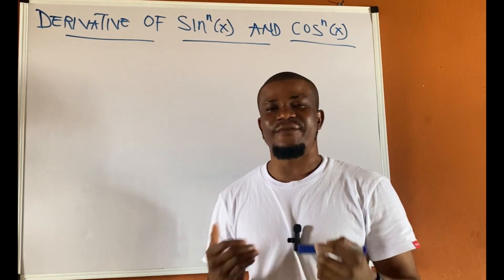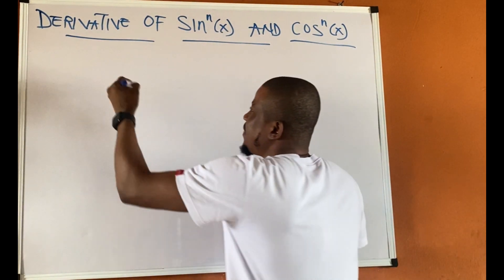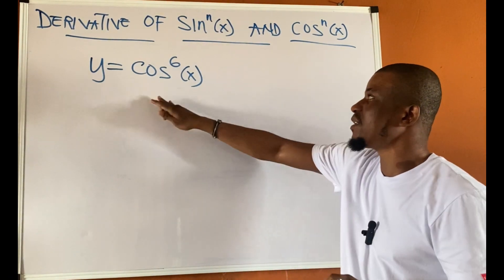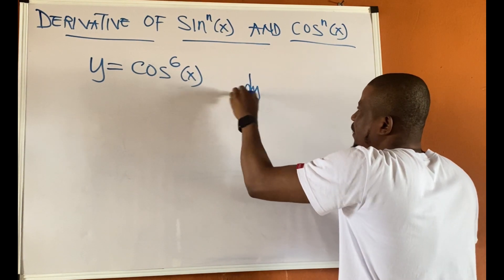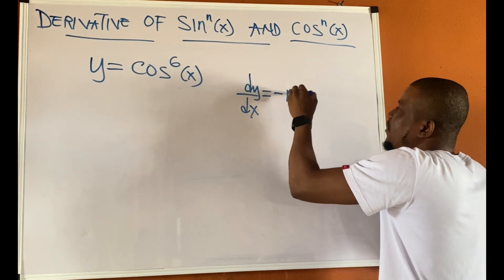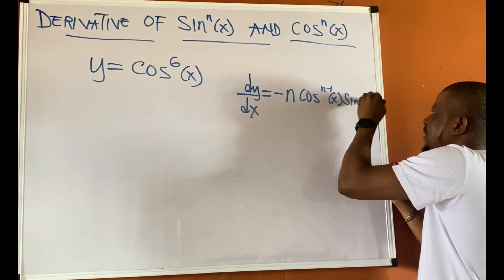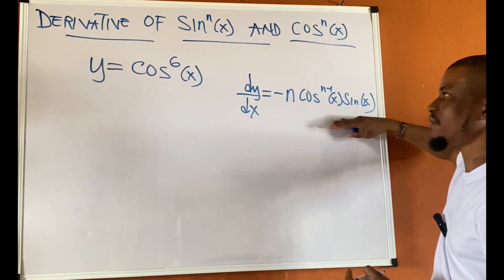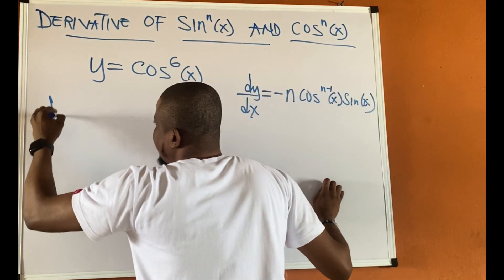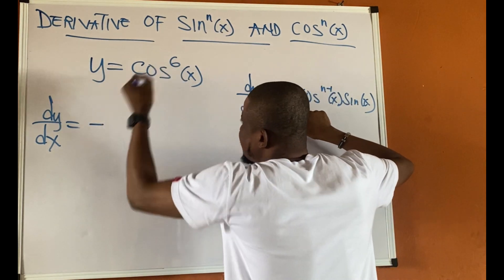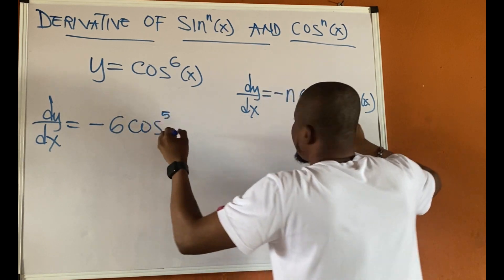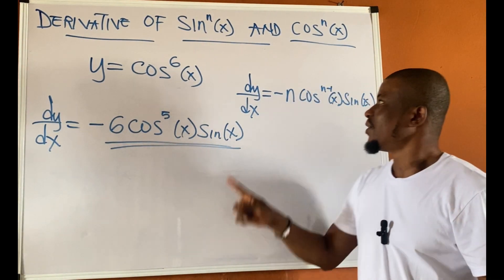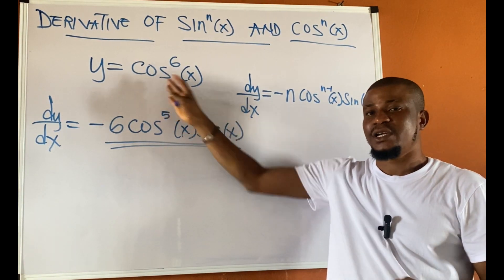Or better still, we can use the formula method to differentiate any function of this form. For example, if y equals cos to power 6 of x, we use the formula: dy/dx equals negative n·cos^(n−1)(x)·sin x. Identifying n as 6, we get negative 6·cos^5(x)·sin x. Whether you use the formula or the chain rule method, you can find your dy/dx.